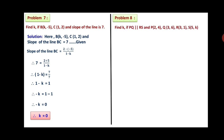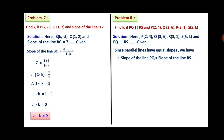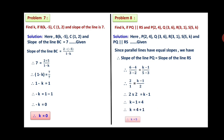Problem 8: Find k if PQ is parallel to RS, where P(2, 4), Q(3, 6), R(3, 1) and S(5, k). Since parallel lines have equal slopes, slope of PQ = slope of RS. Slope of PQ = (6 − 4)/(3 − 2) = 2/1 = 2. Slope of RS = (k − 1)/(5 − 3) = (k − 1)/2. Setting equal: 2 = (k − 1)/2, so k − 1 = 4, therefore k = 5.